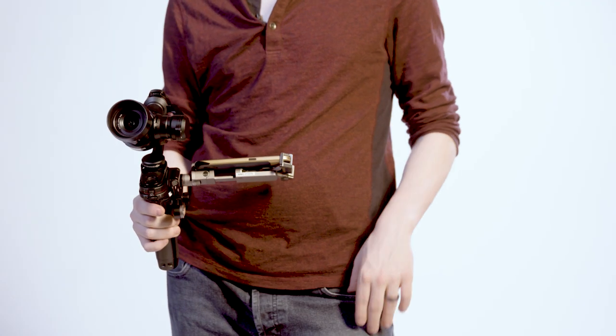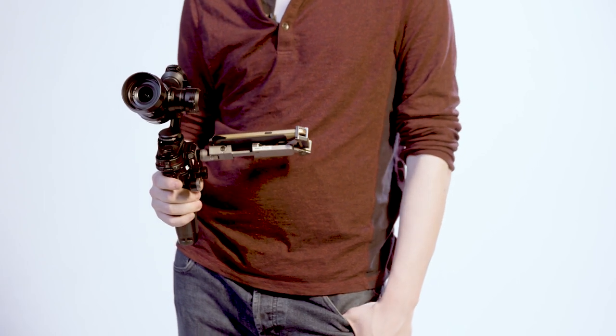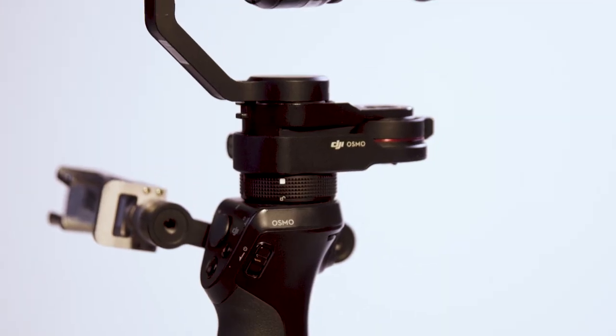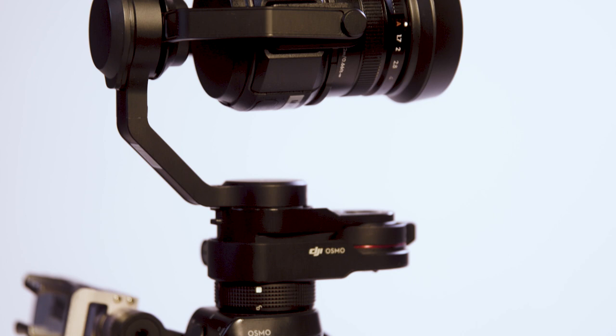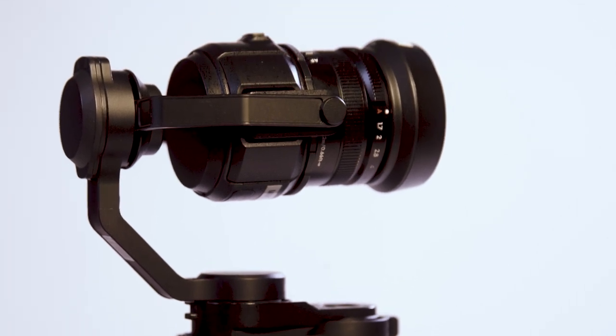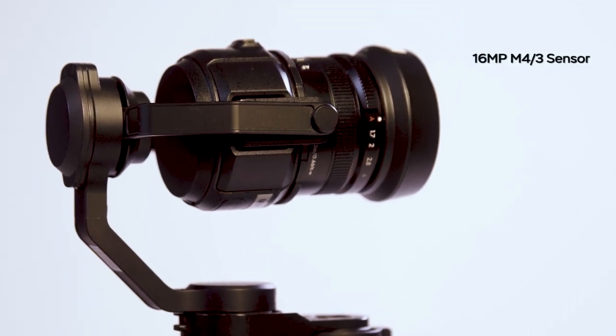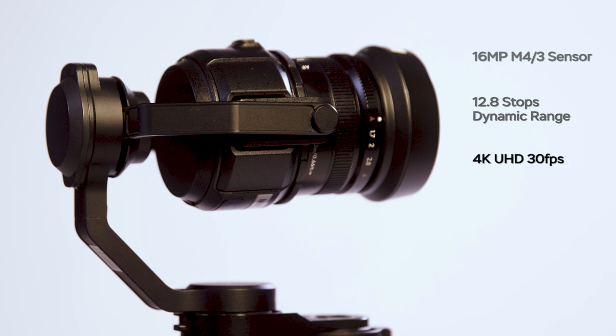The Osmo Pro offers a higher level of production value in one of the smallest handheld packages. It uses the same handle as other Osmo products, but utilizes the DJI X5 camera. The X5 camera features a 16-megapixel micro four-thirds sensor with 12.8 stops of dynamic range and is capable of video recording in 4K UHD up to 30 frames per second and 1080p HD up to 60 frames per second, as well as RAW photos.